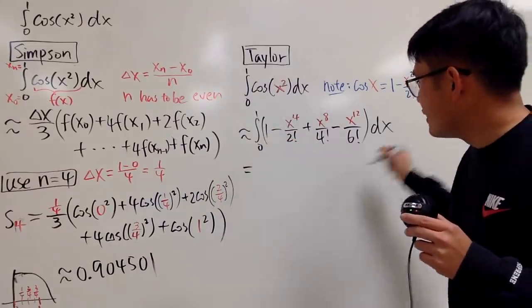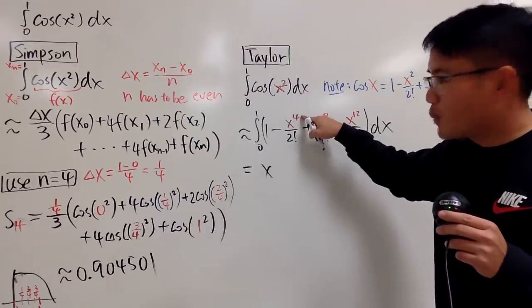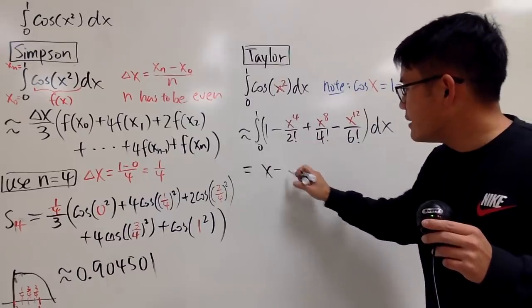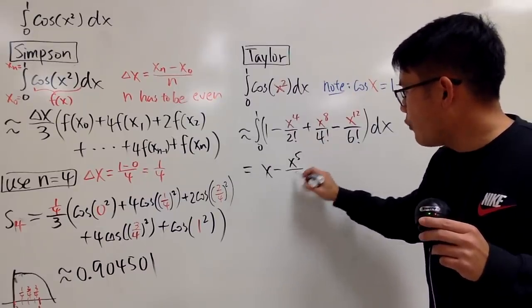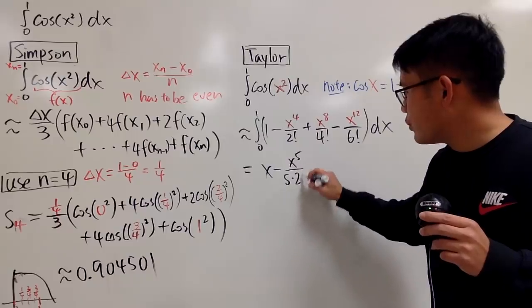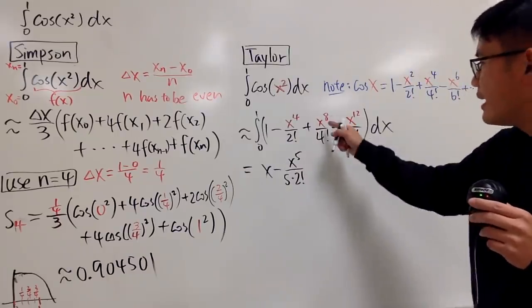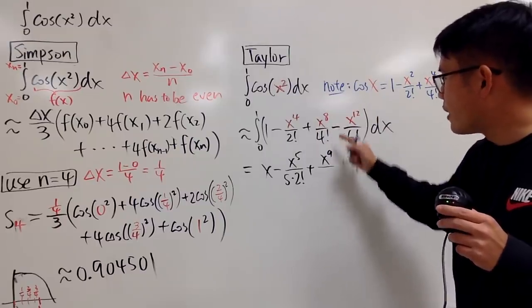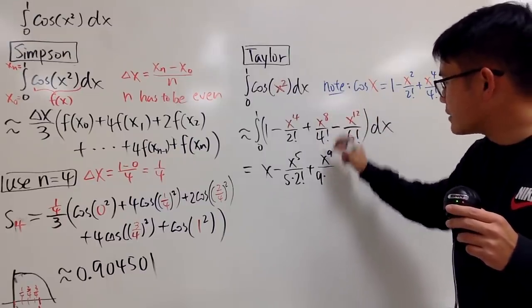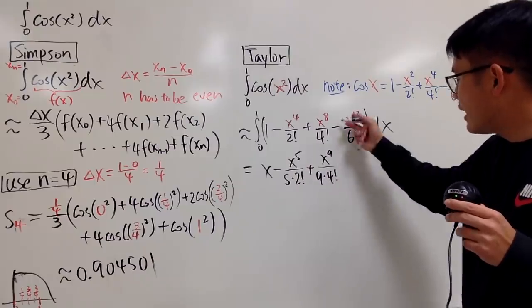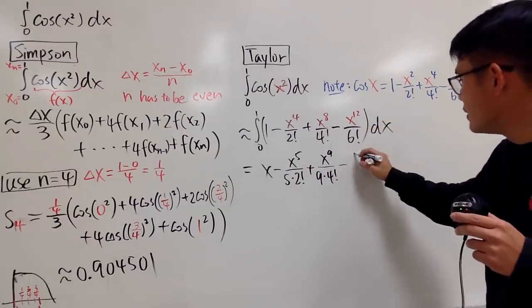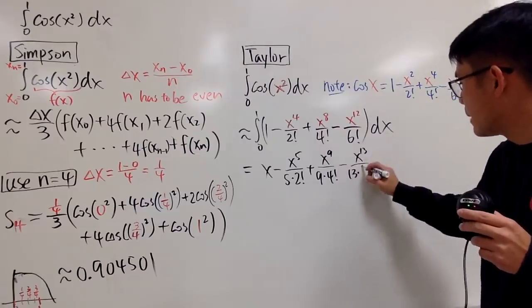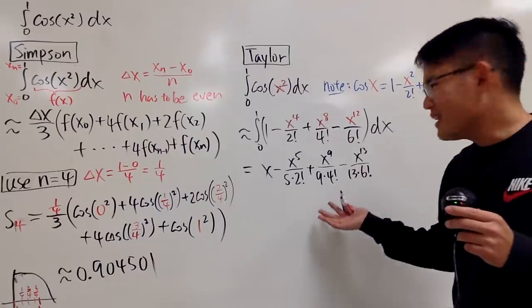Integrating 1 in the x world, we get x. Integrating this, you add 1 to the power, which is 5, and divide by that. So you have minus x to the fifth power over 5 times 2 factorial. Then we add, you add 1 to the power, so it's x to the ninth power divided by 9 times 4 factorial. Then minus, you add 1 to the power which is 13, and divide by 13, then multiply by 6 factorial.